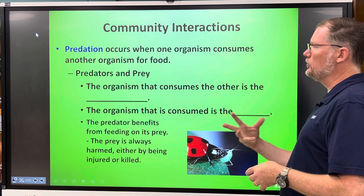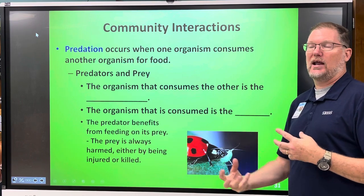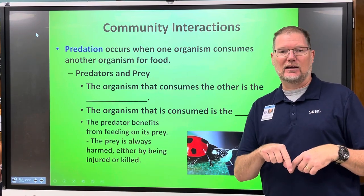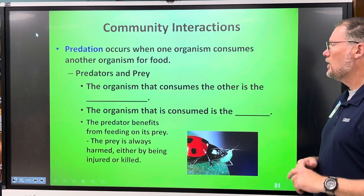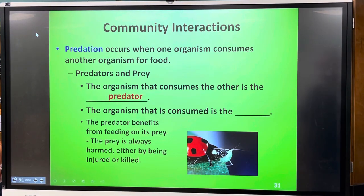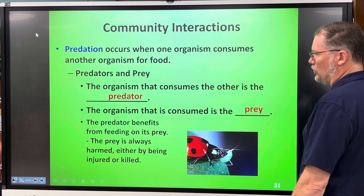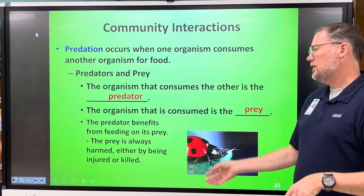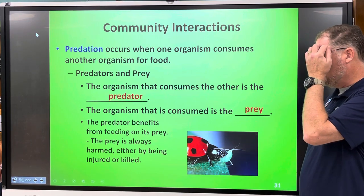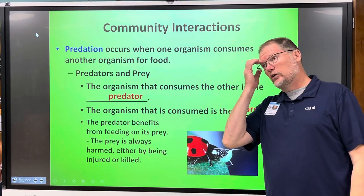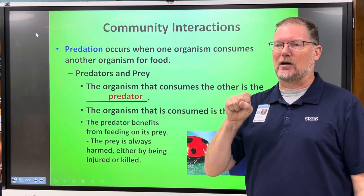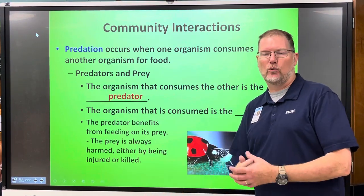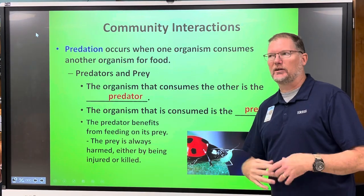Predation is when one organism consumes another — it could be an animal eating another animal, an animal eating a plant, or a plant eating an animal like the Venus flytrap. The organism that consumes is the predator; the one being consumed is the prey. The predator always benefits from feeding on its prey, and the prey is always harmed — either by being injured or killed, though something could take a bite and the prey could survive and heal.